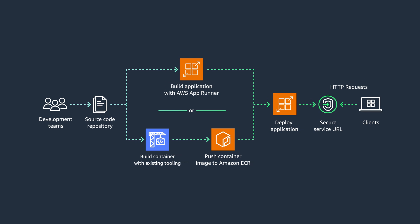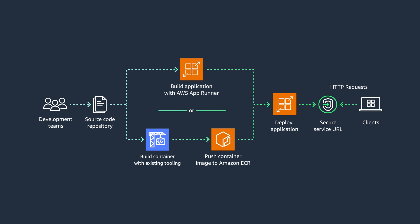AWS AppRunner accelerates innovation by abstracting away infrastructure and streamlining web application development. In this episode, we examined how AppRunner can effectively address the various obstacles encountered by development teams by facilitating the efficient deployment and execution of containerized web applications on a large scale, resulting in a significant reduction in time to market. Check out the links in the description below for more details. Thank you for watching Back to Basics — see you next time.